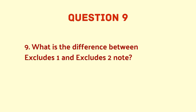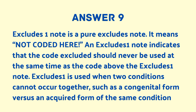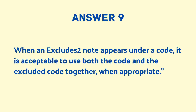What is the difference between Excludes1 and Excludes2 notes? Excludes1 is a pure exclusion note meaning 'not coded here.' It indicates the excluded code should never be used at the same time as the code above the Excludes1 note — used when two conditions cannot occur together, such as a congenital versus an acquired form of the same condition. When an Excludes2 note appears, it is acceptable to use both codes together when appropriate.